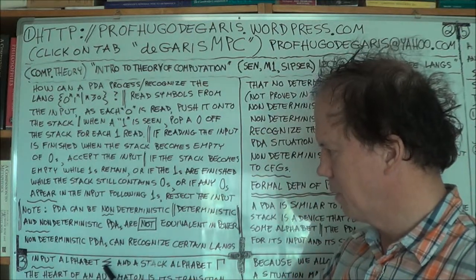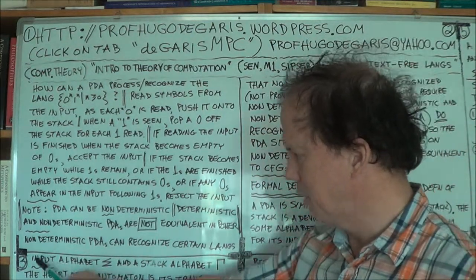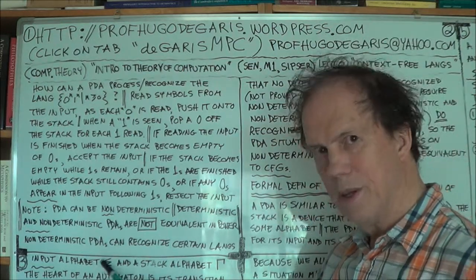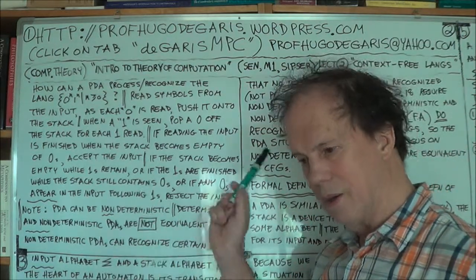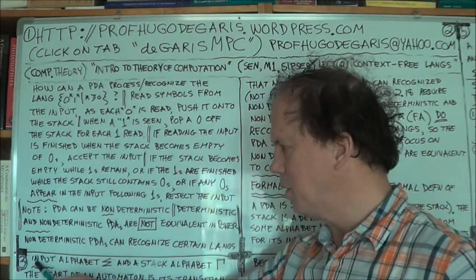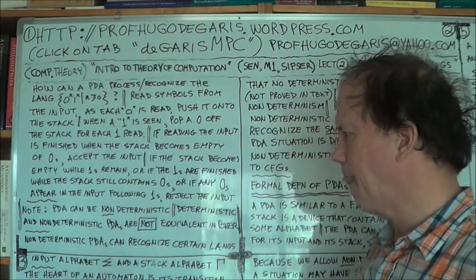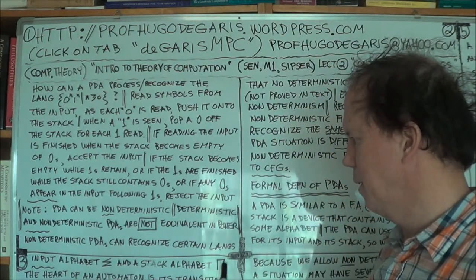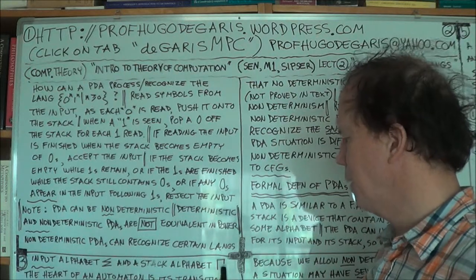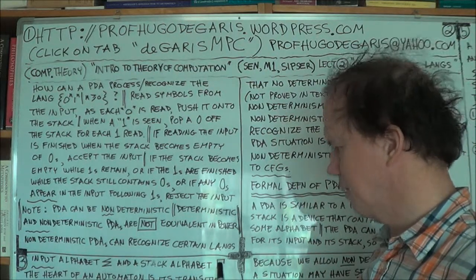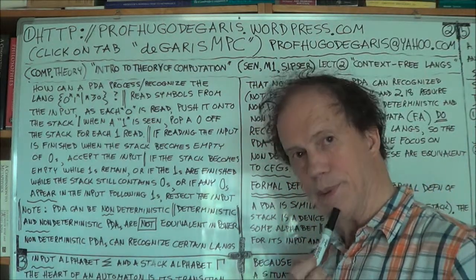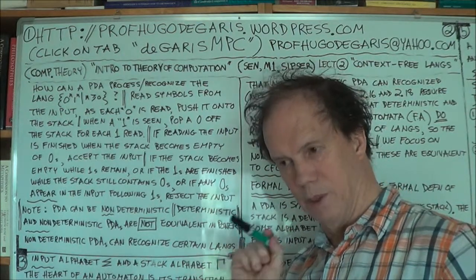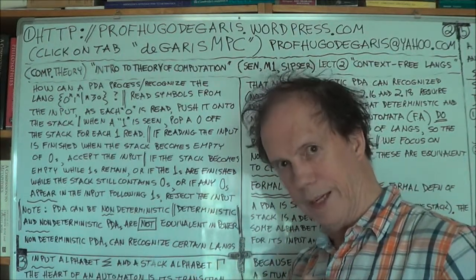Capital Sigma is the input alphabet — the input string alphabet, the set of symbols that you will see in your input string. And capital Gamma is the stack alphabet: the set of symbols that you can push and pop on the stack.